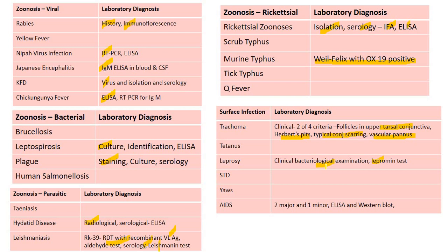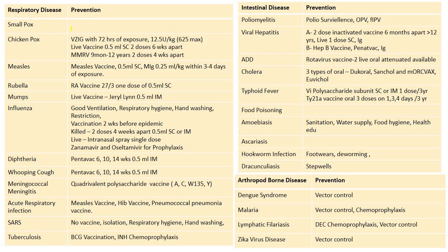Based on the lepromin test, multibacillary and paucibacillary categories are determined and treatment initiated accordingly. AIDS: two major and one minor criteria. Western blot is a specific confirmatory test; ELISA is a sensitive screening test.